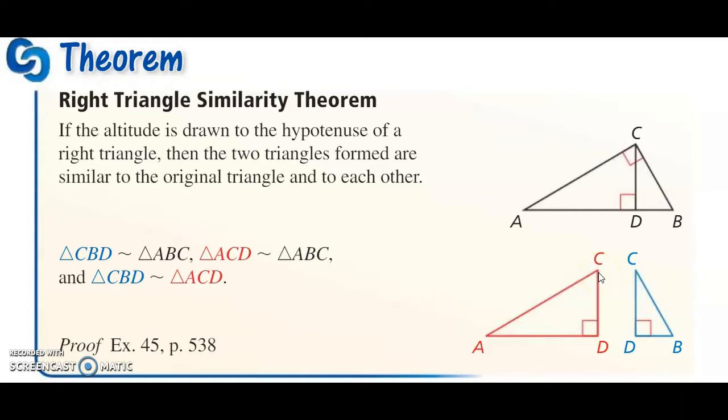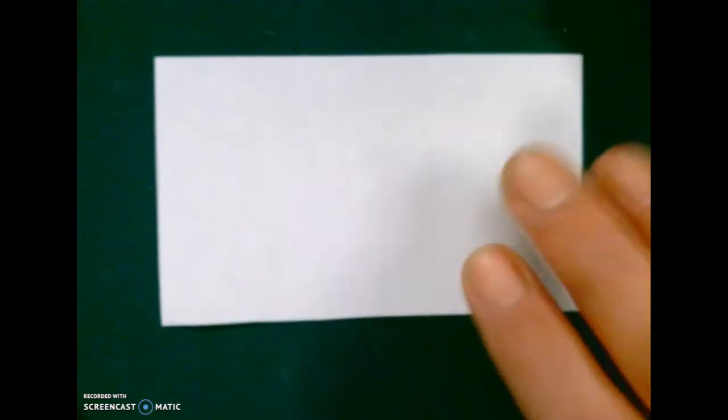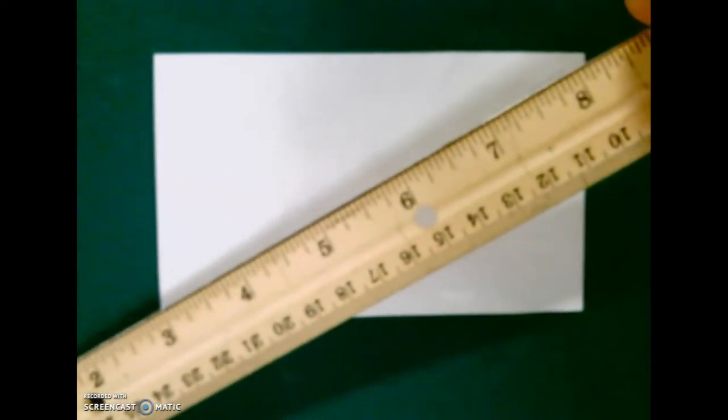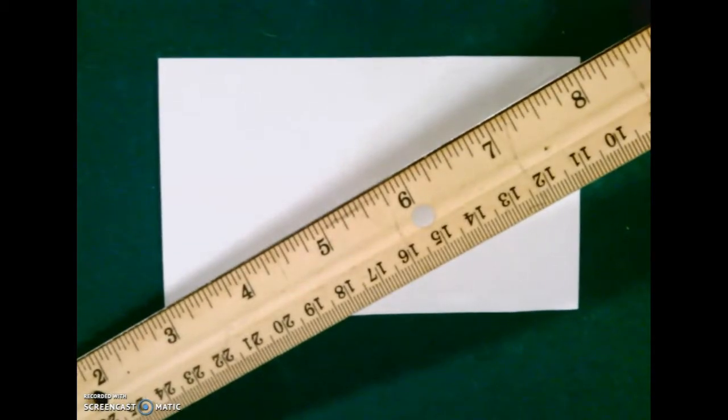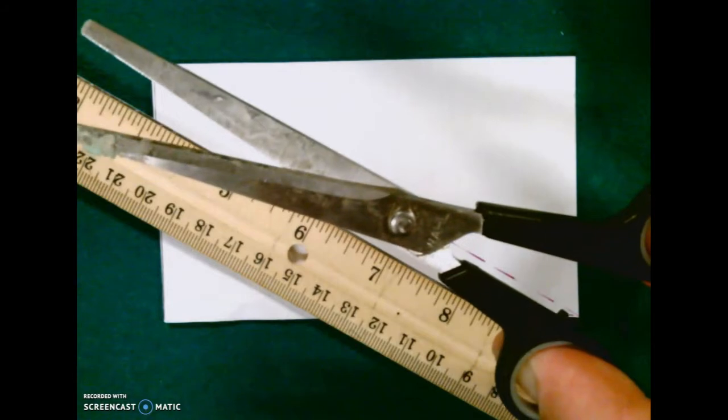If you have a 3x5 index card or pretty much any piece of rectangular paper, take a second and grab one. You should now have a rectangle in front of you. Next, draw the diagonal—either diagonal will work. Use a ruler to make sure it's straight.